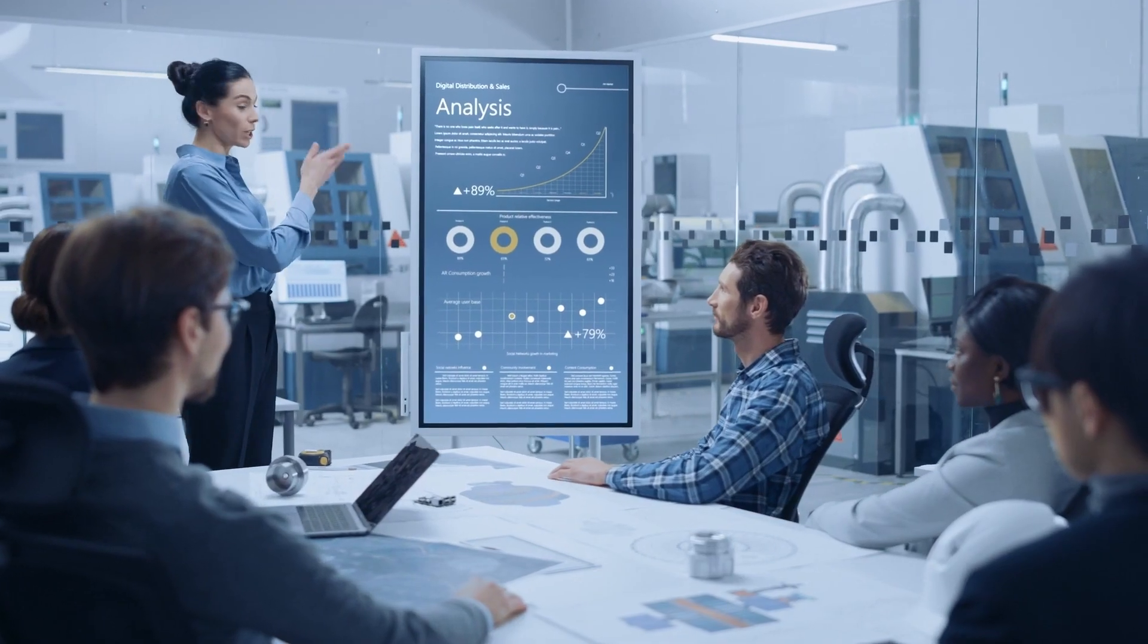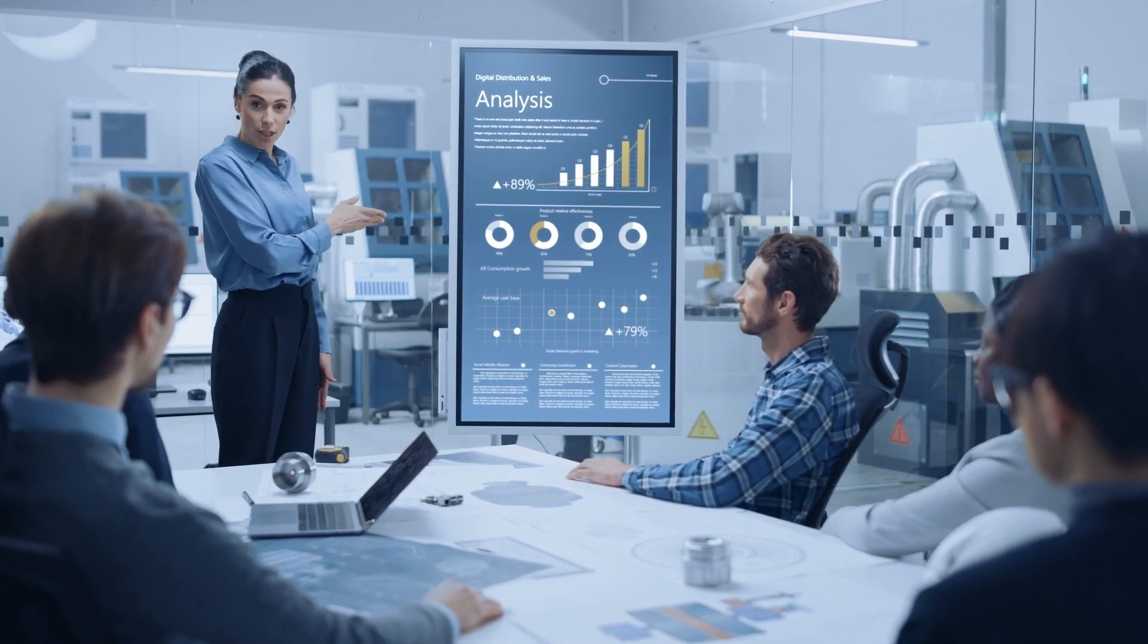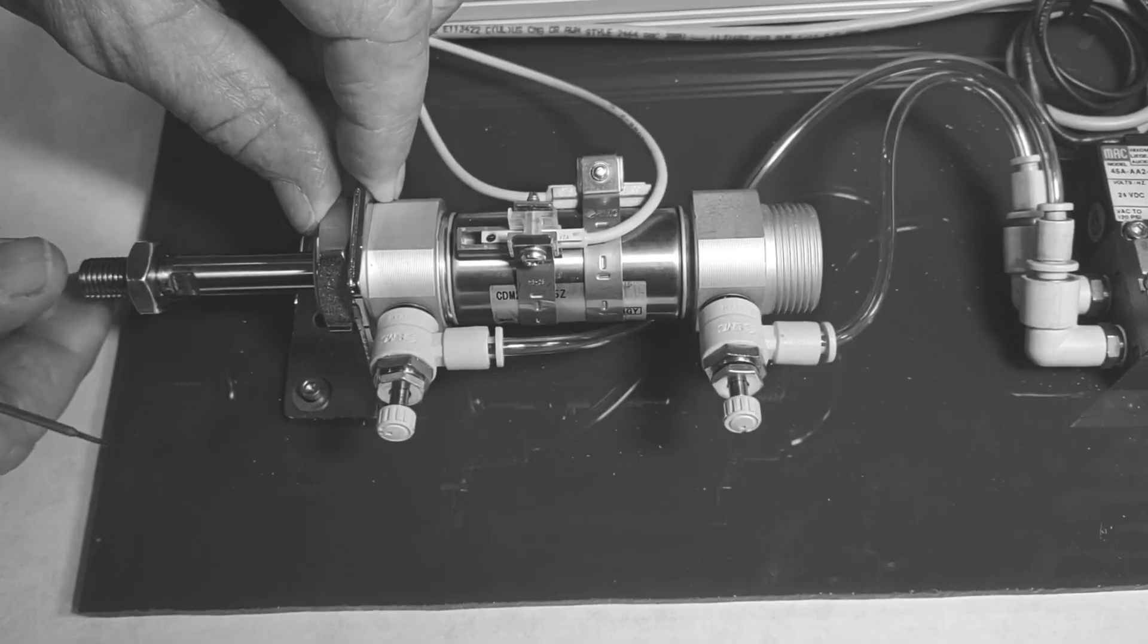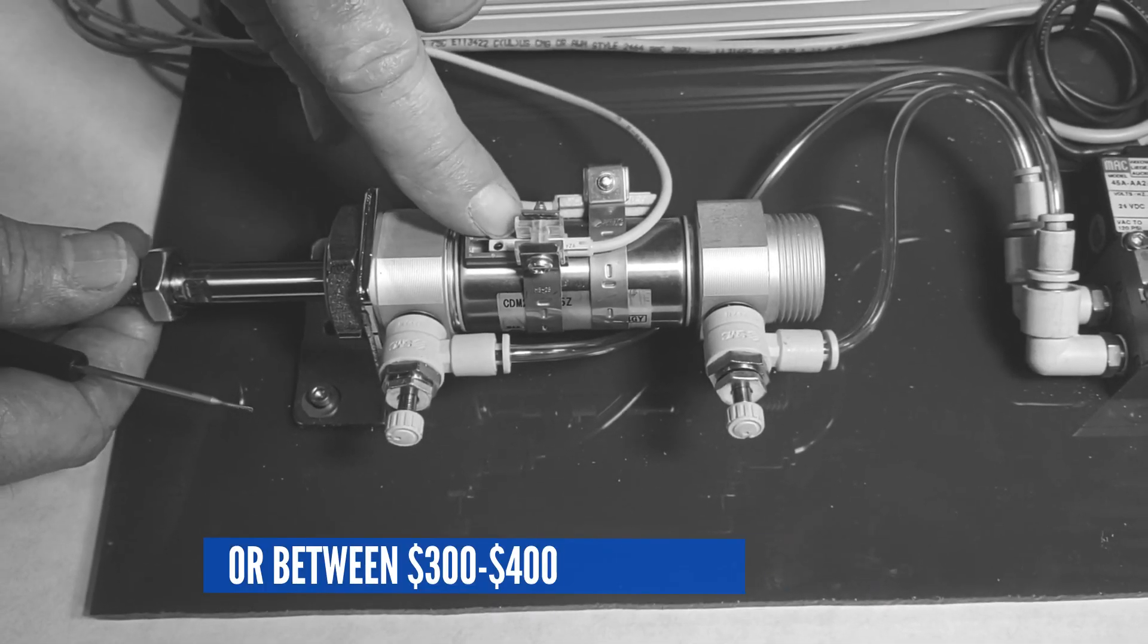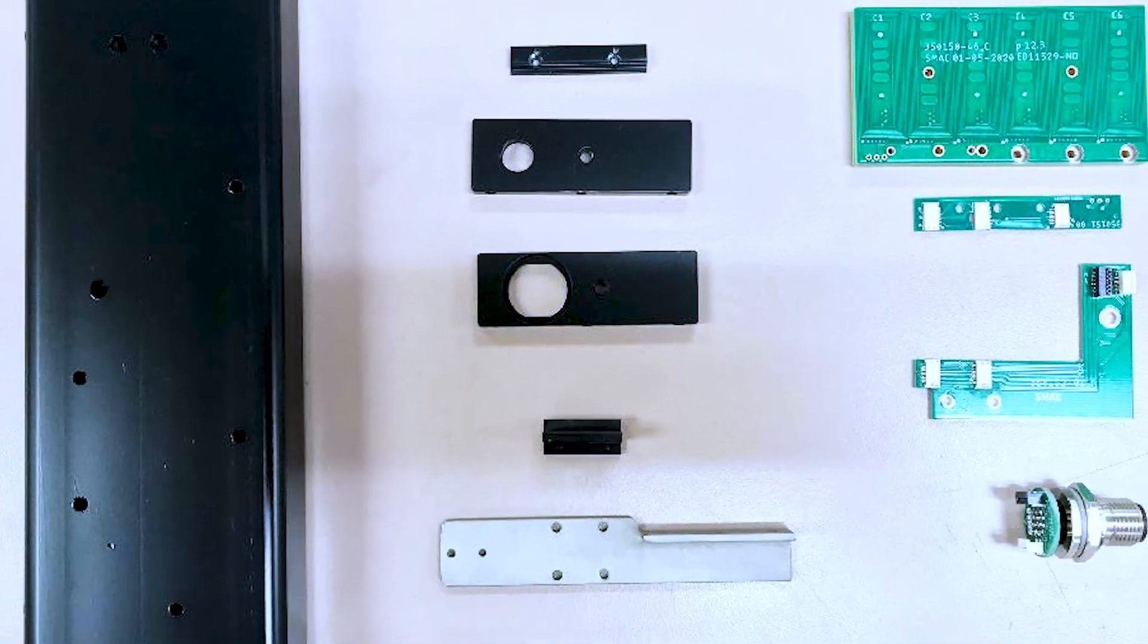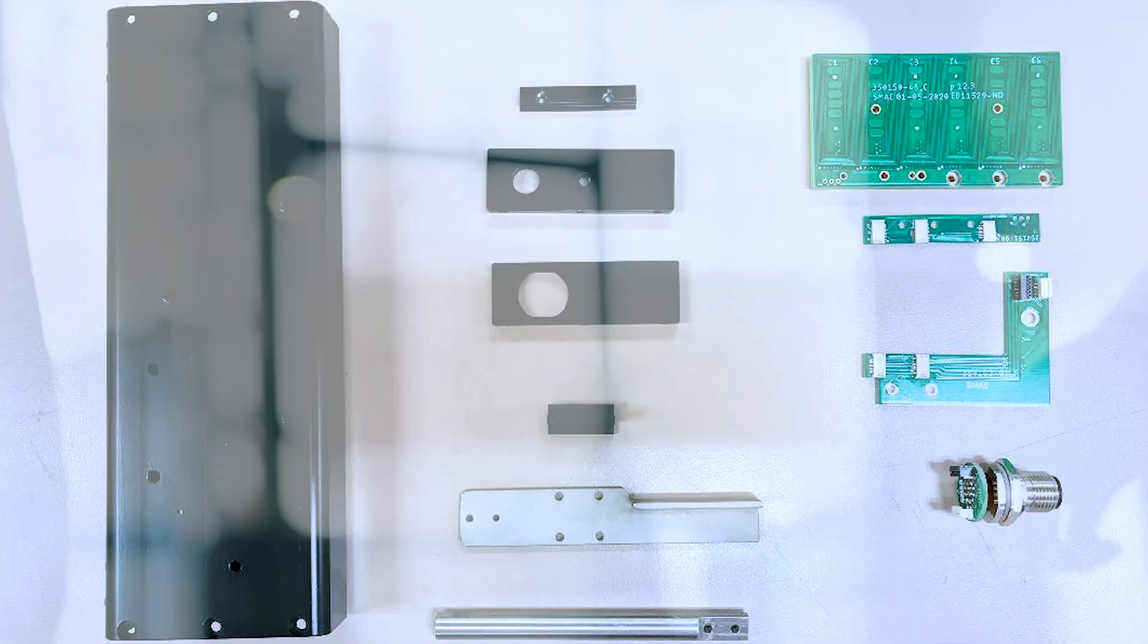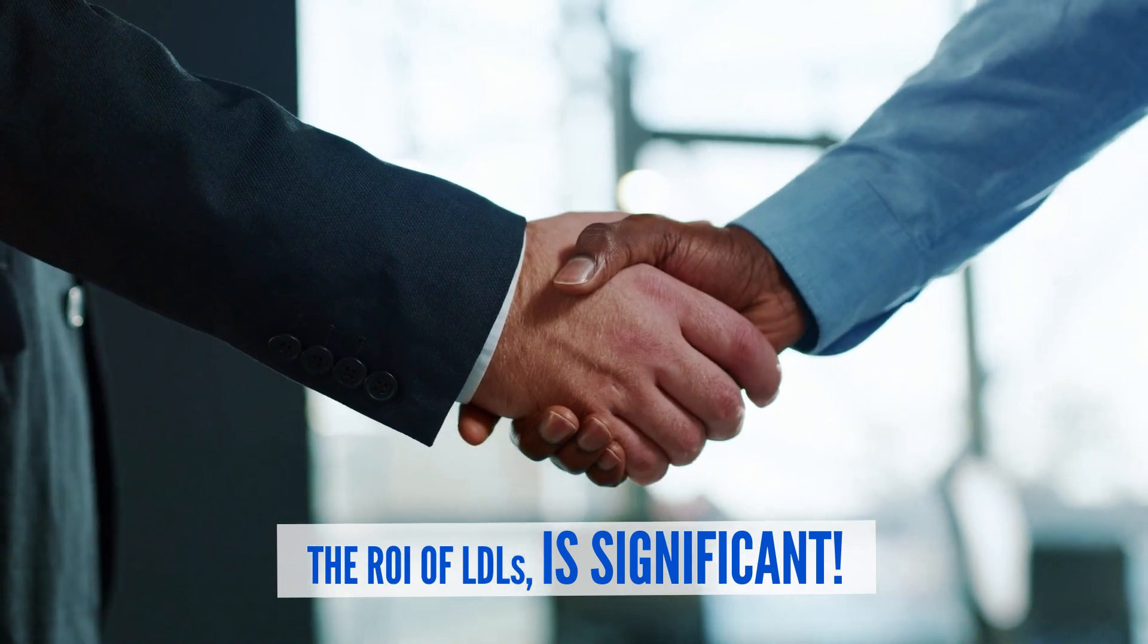The cheapest air cylinders have rods that can rotate. To prevent this, manufacturers must use a much more expensive double rod system. Air cylinder costs start around $250 or between $300 and $400 for non-rotating types. LDLs cost about the same as the non-rotating rod air cylinders, but you get much more for the money. The return on investment of LDLs is significant.